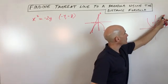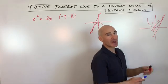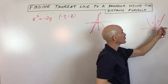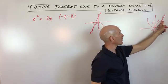So you have a parabola here, this U-shaped graph, and you want to find the equation of the tangent line to the parabola at a given point. So that's the point right there.